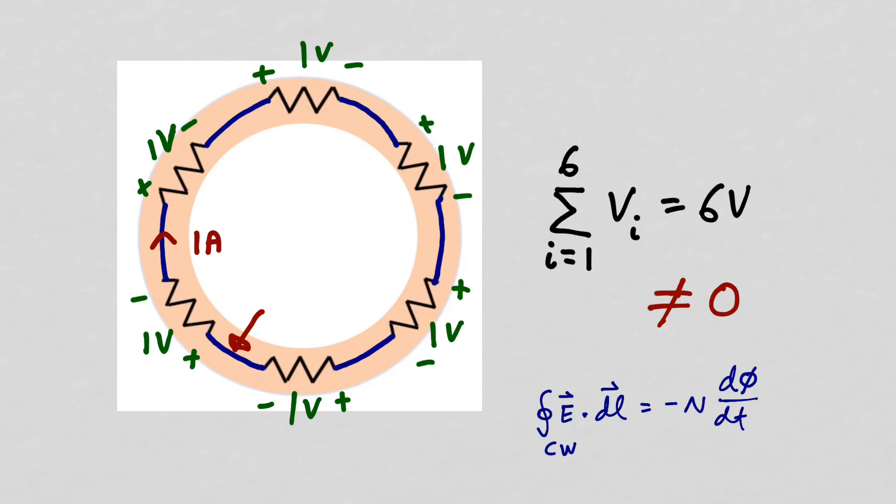Kirchhoff's voltage law is a special case of Faraday's law when there is no change in magnetic flux with respect to time so that the right hand side of Faraday's law is 0.